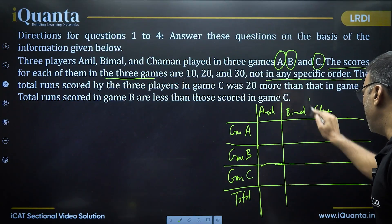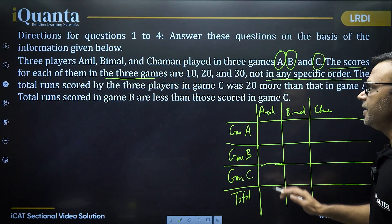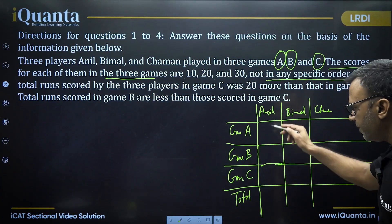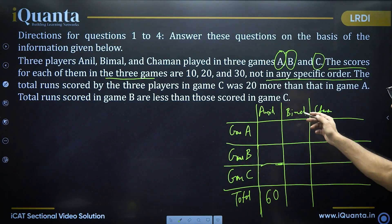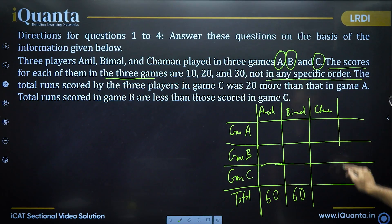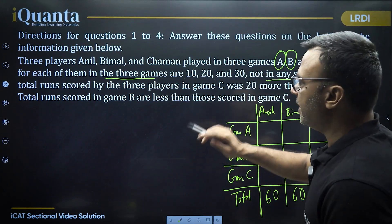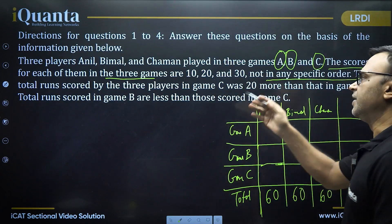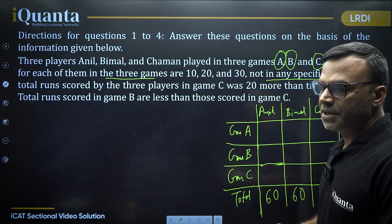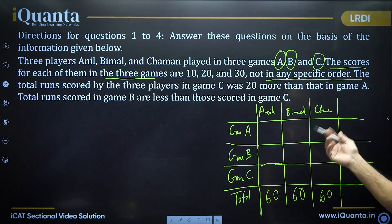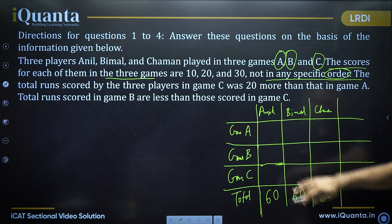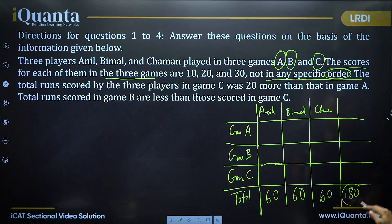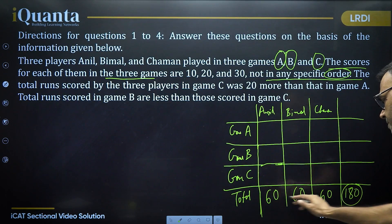I don't know where Anil scored 10, 20, or 30, but one of the three is 10, one is 20, and one is 30. So the total score of Anil is going to be 60 for sure. Total score of Bimal is also 60. Total score of Chaman is also 60. Read it again — the scores for each of them in three games are 10, 20, 30, but we don't know the order. Similarly for Bimal and Chaman. But the total will be 60, 60, 60 — so the overall total is 180.